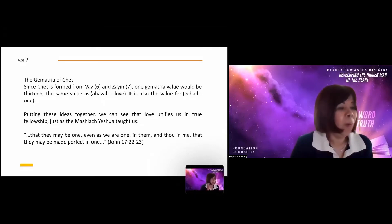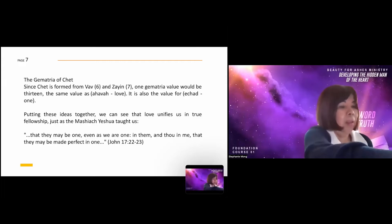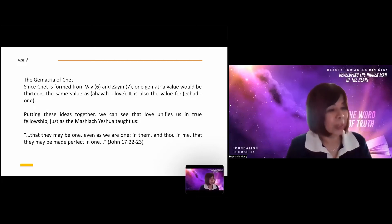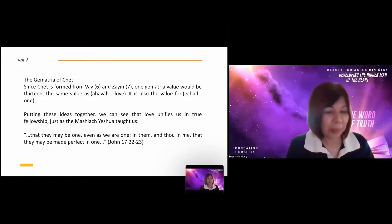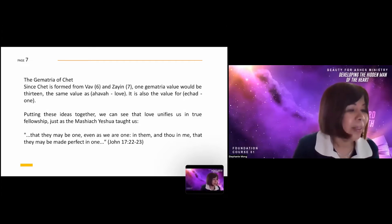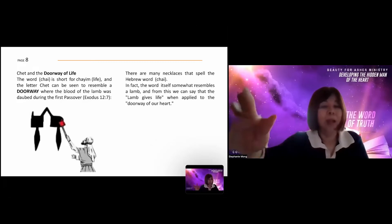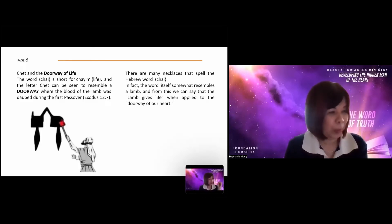Since Het is formed from Vav and Zayin, one gematria value will be 13 — the same value as love. It's also the value for 'echad,' meaning one. Putting these ideas together, we see that love unifies us in true fellowship, just as Yahshua taught. Het is also about unity — 'that they may be one even as we are one.' The word 'Chai' is short for 'Chayim,' or life, and the letter Het resembles a doorway.